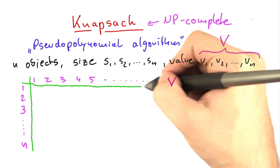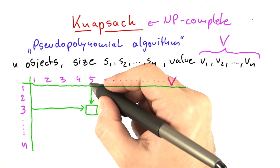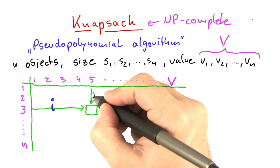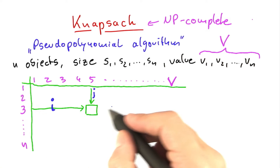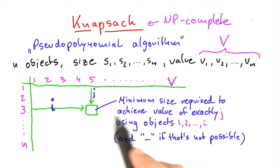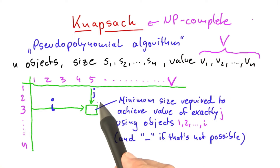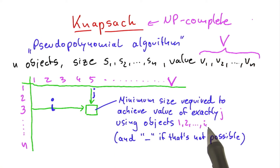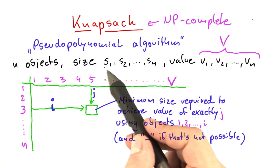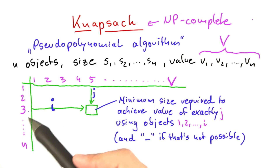Each cell in this table has the following meaning. I'll call the row i and the column j. The cell in row i and column j will be the minimum size required to achieve a total value of exactly j, using objects 1, 2, 3, 4, and so on up to i. So in the first row you can only use object 1; in the second row, objects 1 and 2; in the third row, objects 1, 2, and 3, and so on.